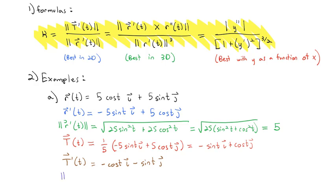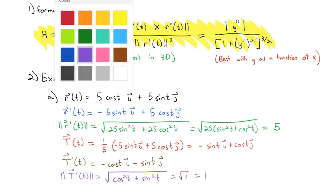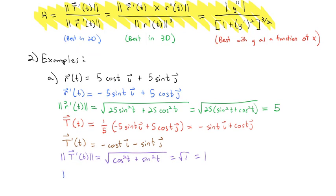The numerator is the magnitude of this unit tangent vector derivative, which is the square root of cos²(t) + sin²(t). Since sin² + cos² = 1, that magnitude is 1. Now we're ready to apply our curvature formula: the magnitude of the unit tangent vector's derivative divided by the magnitude of the vector-valued function's derivative. The tangent derivative's magnitude was 1, the magnitude of the vector's derivative was 5, so we have a curvature of 1/5.